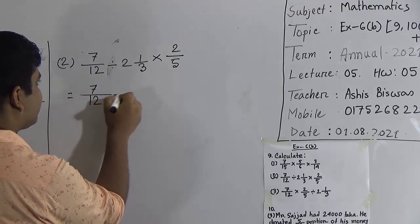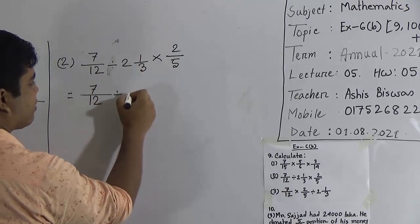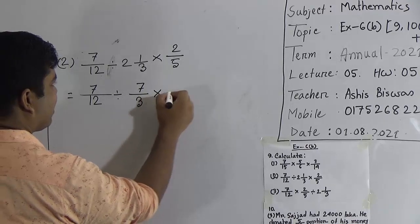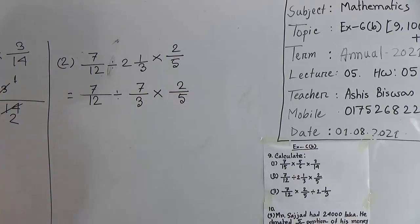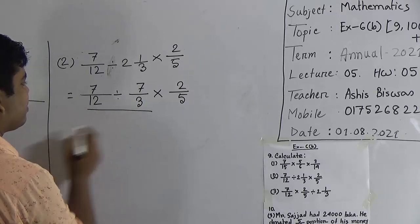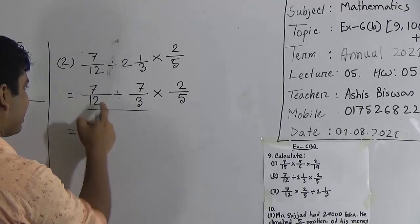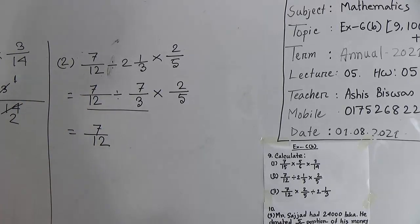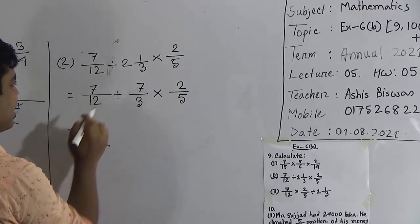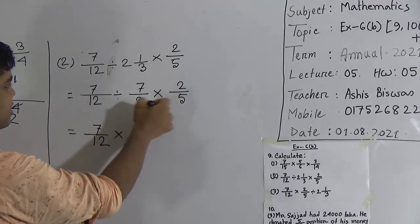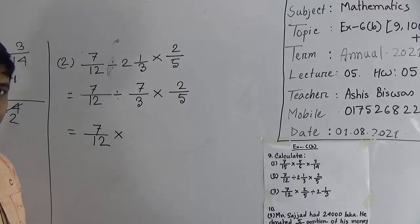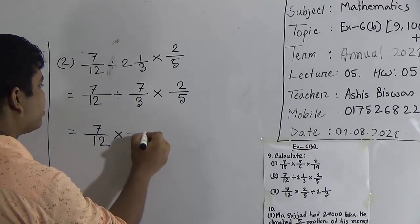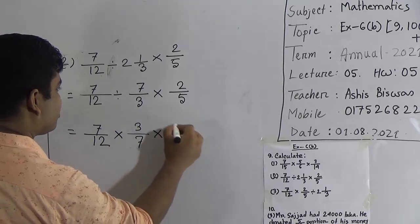So: 7 by 12, divided by — 2 × 3 = 6, plus 1 = 7, over 3 — multiplied by 2 by 5. As the rules of simplification, at first we do the work of division. Division of two fractions means multiplication of the first fraction with the reciprocal of the second fraction. That means the division sign changes to a multiplication sign, and the second fraction is reversed — numerator becomes denominator and denominator becomes numerator. So we get 3 by 7, then multiplied by 2 by 5.